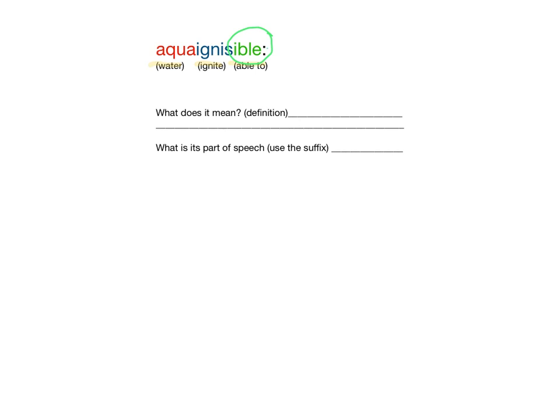If I start with the definition of the suffix, the definition is going to start with 'able to.' Well, I am able to what? If I look at my other two parts, am I able to water ignite? That doesn't make sense. But am I able to ignite water? So that makes more sense — ignite water.